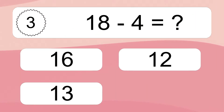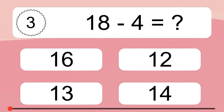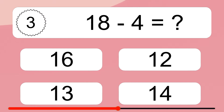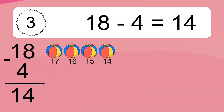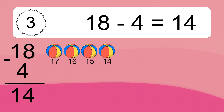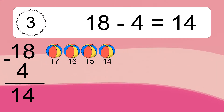18 minus 4 equals what? 18 minus 4 equals 14. Let's count it: 17, 16, 15, 14.